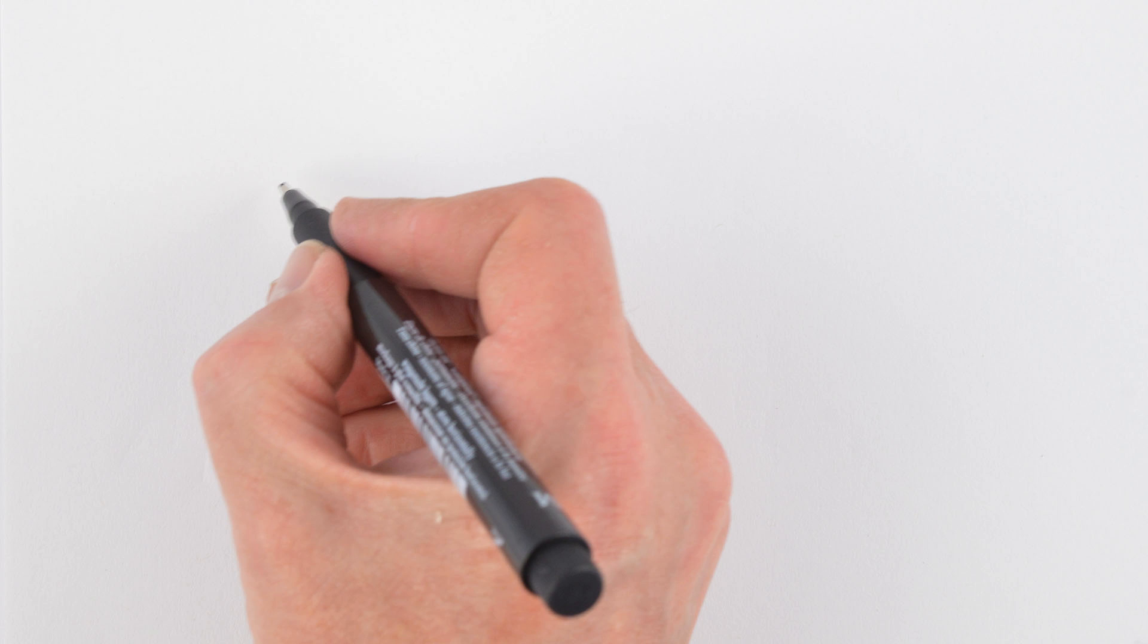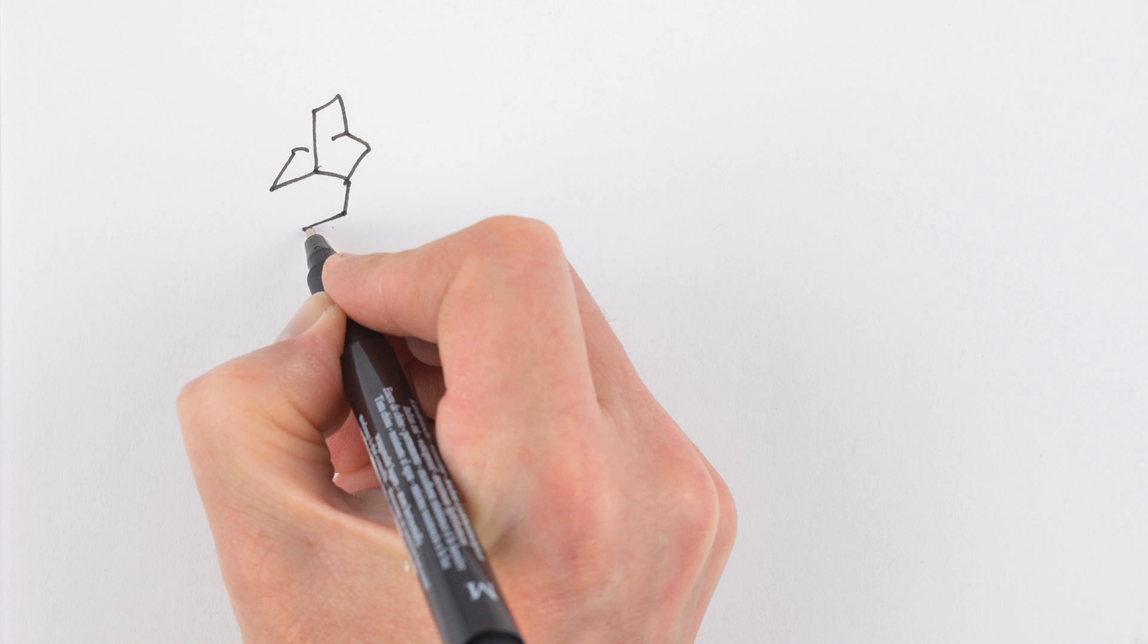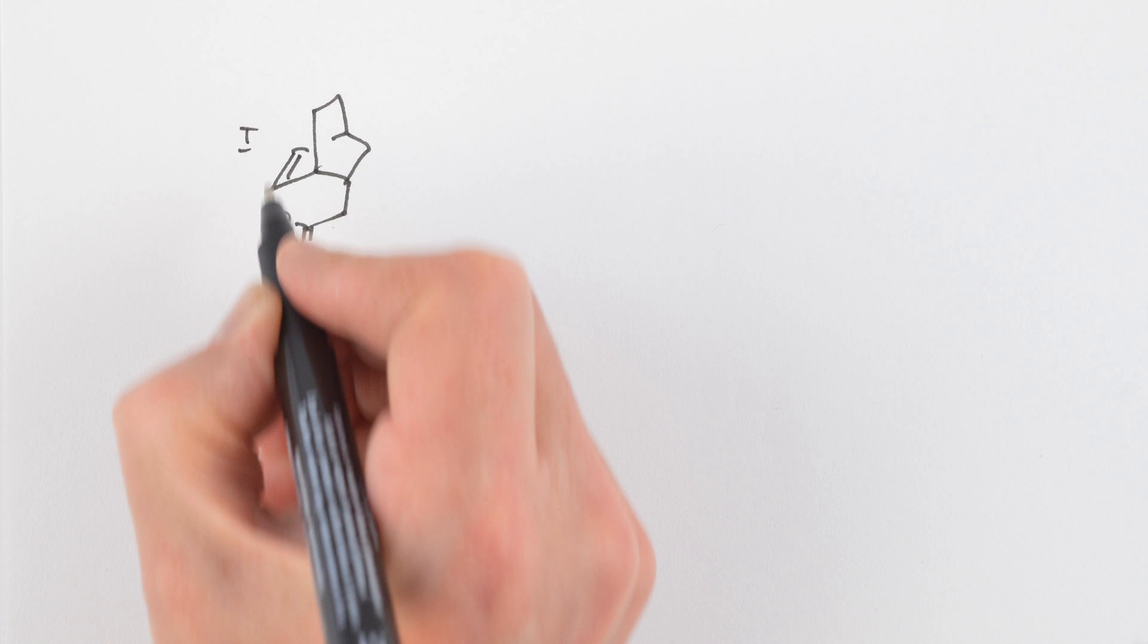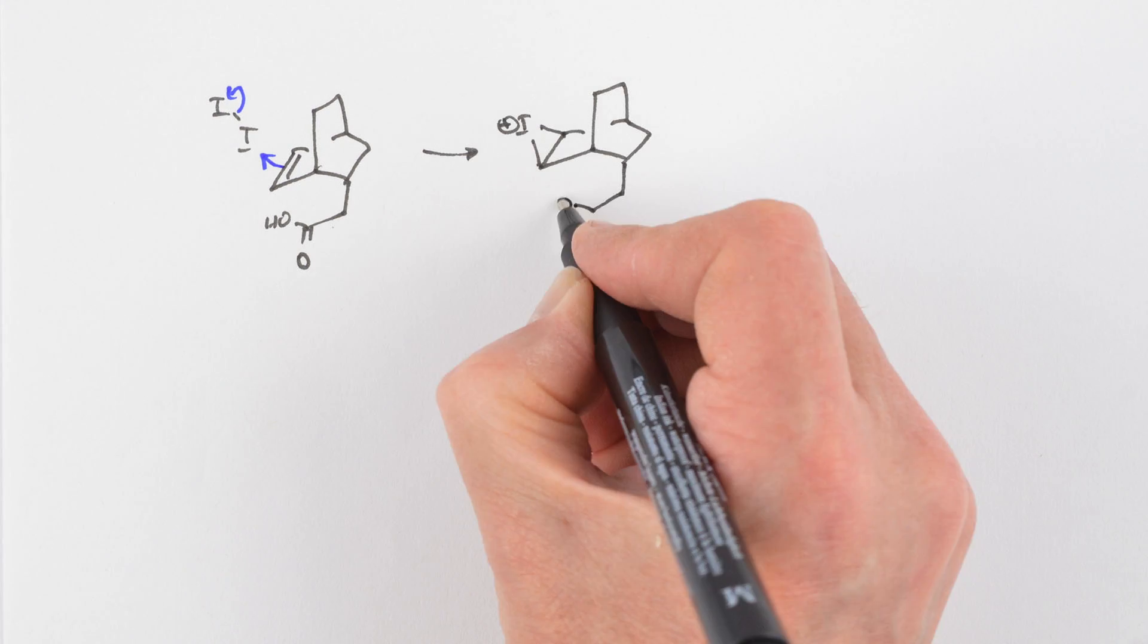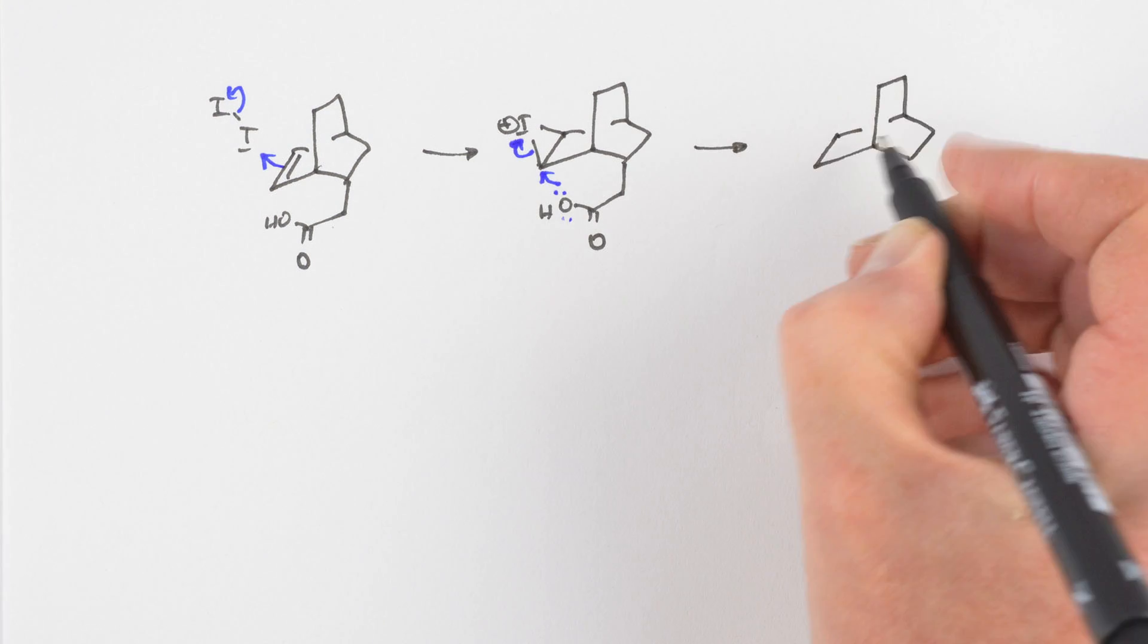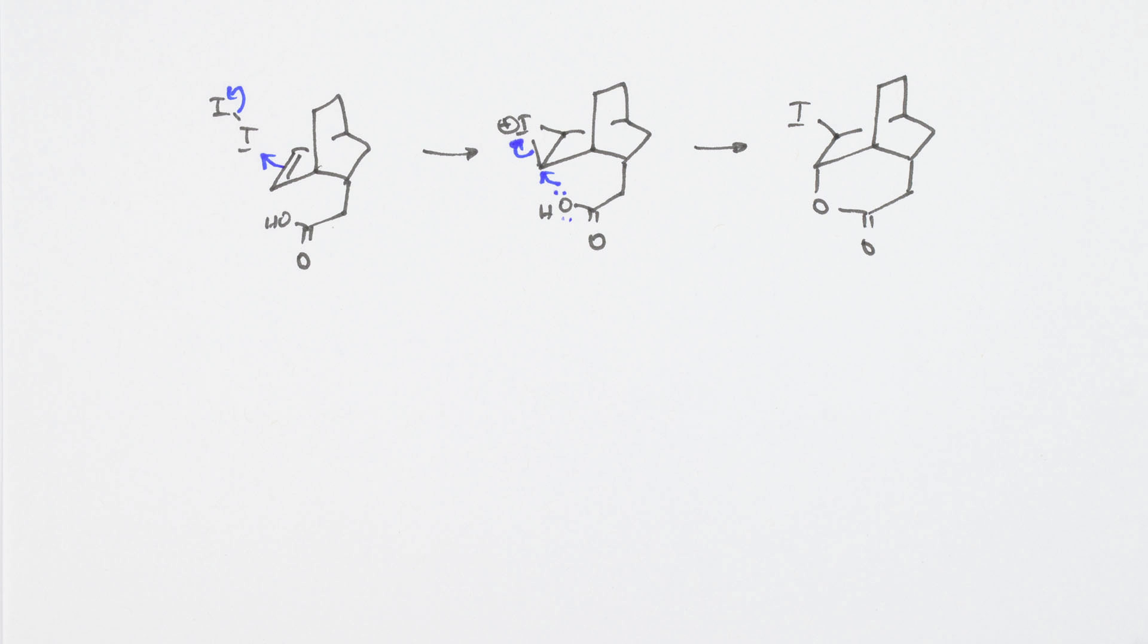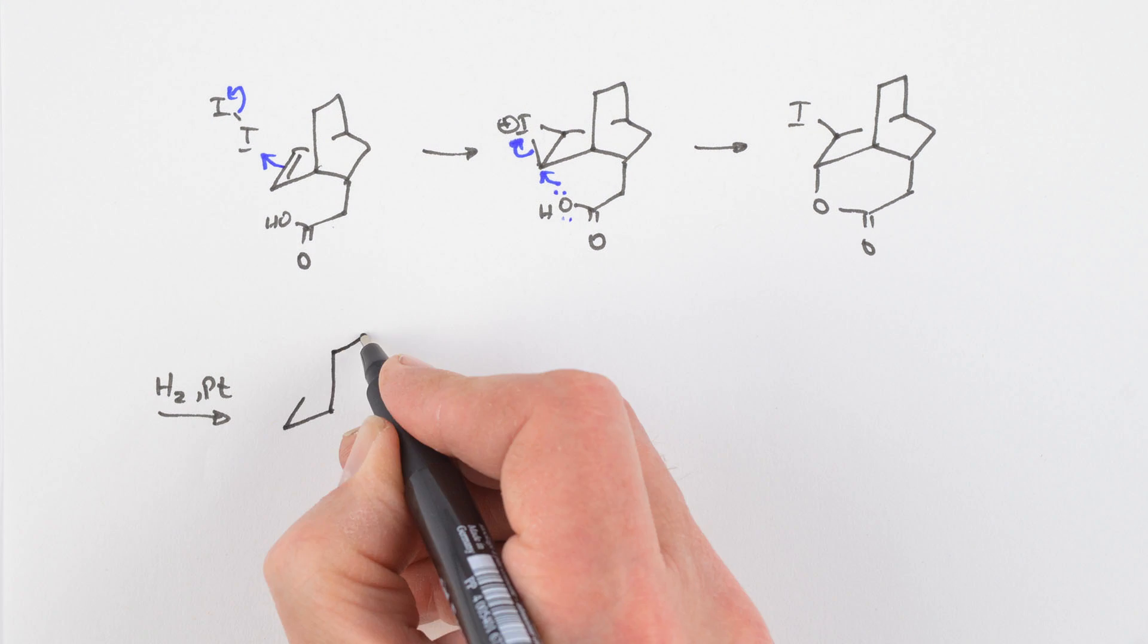Getting the ketone into the right place was accomplished by an iodocyclization. Iodination of the double bond starts to take place at the top face because the carboxyl group occupies the bottom. And then the carboxylate opens the iodonium ion from the bottom, placing an oxygen on that important carbon. The iodine was removed under hydrogenation conditions.